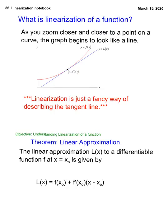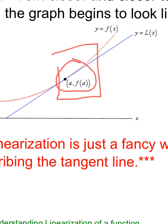We kind of talked about linearization — the idea that when you make your tangent line, the blue is the tangent line and the red is our function. If we get in really really close, it looks like a line. So you can use linearization or a tangent line to estimate a function value. We call that the linearization of the function.